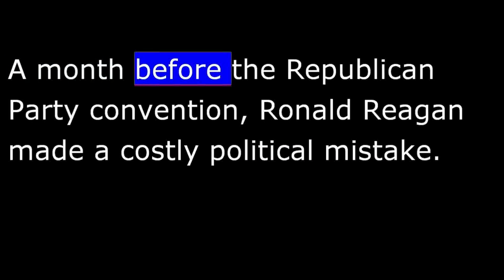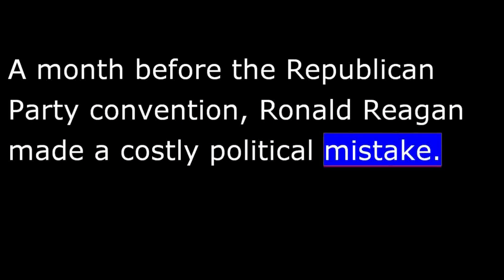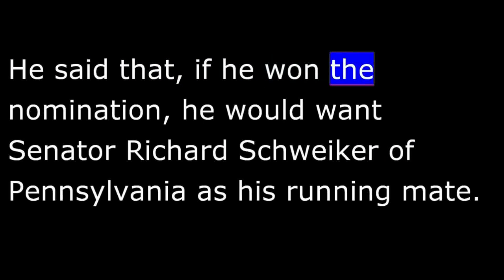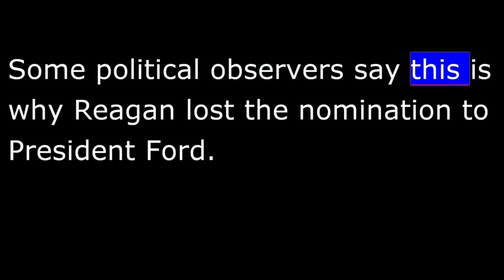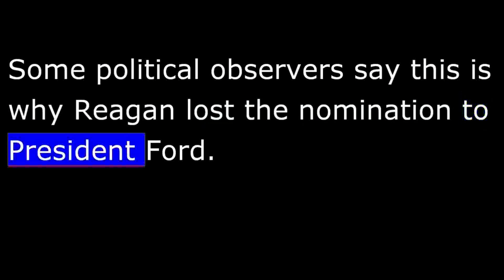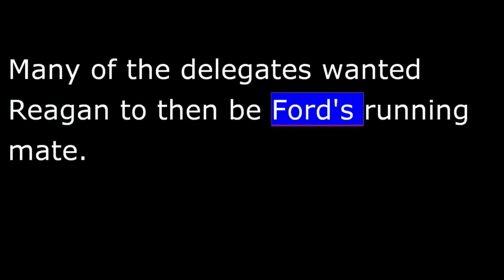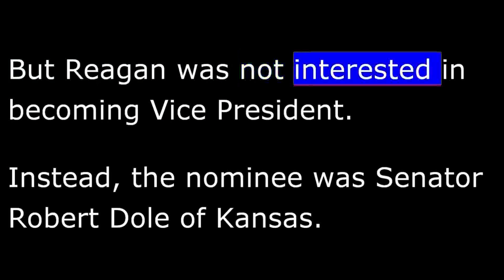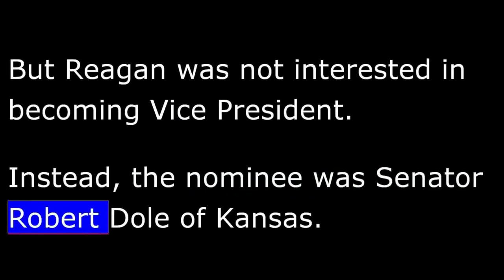A month before the Republican Party convention, Ronald Reagan made a costly political mistake. He said that if he won the nomination, he would want Senator Richard Schweiker of Pennsylvania as his running mate. Conservatives got angry — Schweiker was a liberal Republican. Some political observers say this is why Reagan lost the nomination to President Ford. Many of the delegates wanted Reagan to then be Ford's running mate, but Reagan was not interested in becoming vice president. Instead, the nominee was Senator Robert Dole of Kansas.